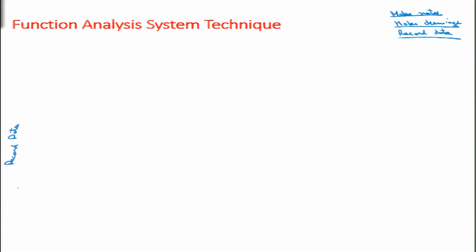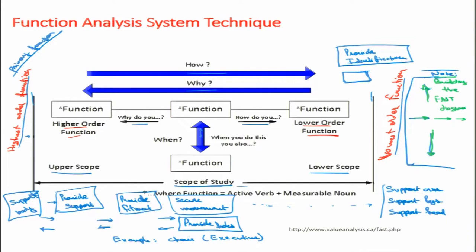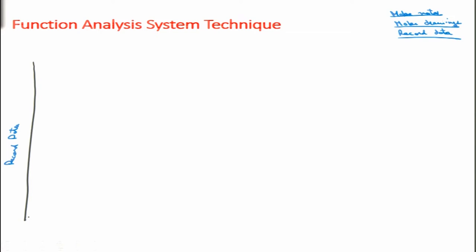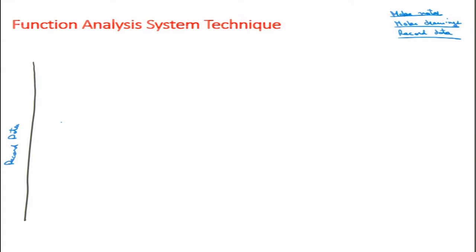So I have put 'record data' as the highest order function and I draw my left scope line. These vertical black lines are our scope of study. The highest order function is on the left-hand side of my left scope line. Now, how do we record the data? To record data we will have to make marks, so I put 'make marks' as the next function.